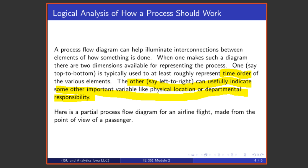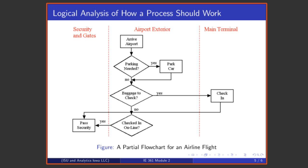So here for example is a process flow diagram for an airline flight made from the point of view of a passenger. As you go top to bottom here, this is roughly the order in which a typical passenger will go through the steps of coming to an airport, getting on an airplane and going to a destination.